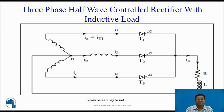This is the circuit diagram of three-phase half-wave controlled rectifier with inductive load. In this circuit, three thyristors are used. The anode of T1, T2, T3 is connected to the source through phase A, phase B, phase C. The cathode of these three thyristors is connected combinedly to one terminal of the load, and the other terminal of the load is connected to the neutral terminal.